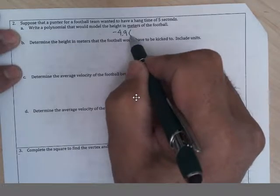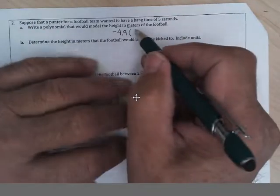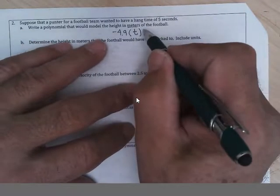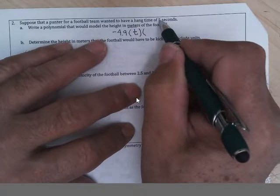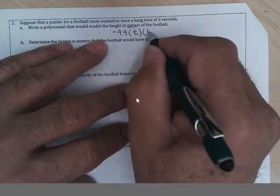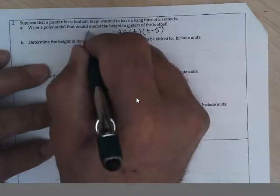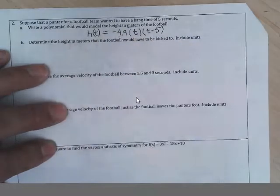And to make it go through zero, where the punter kicks it at the very beginning of time, we would put T or X, accept either. And then again, it wants to be at the ground at five seconds. So we're going to do T minus five. And that would be the height of the football at different times given by this equation.